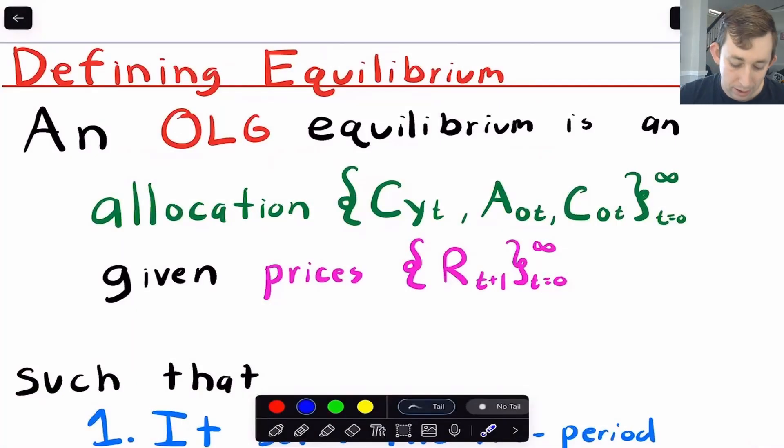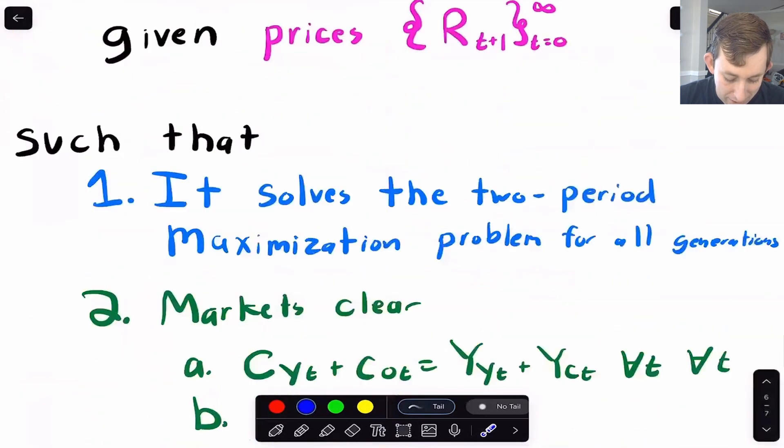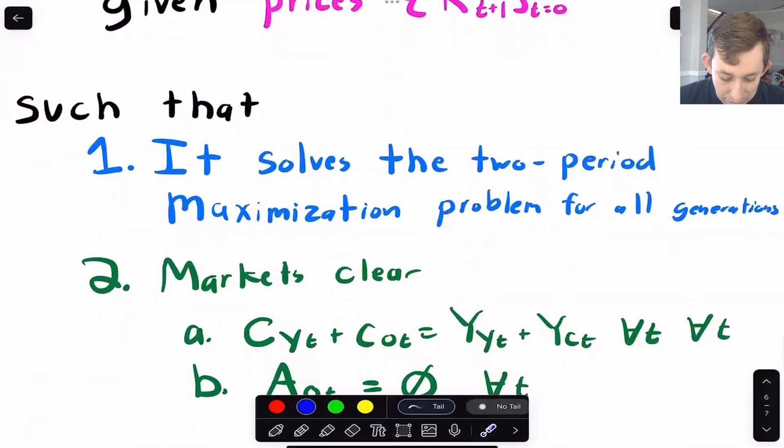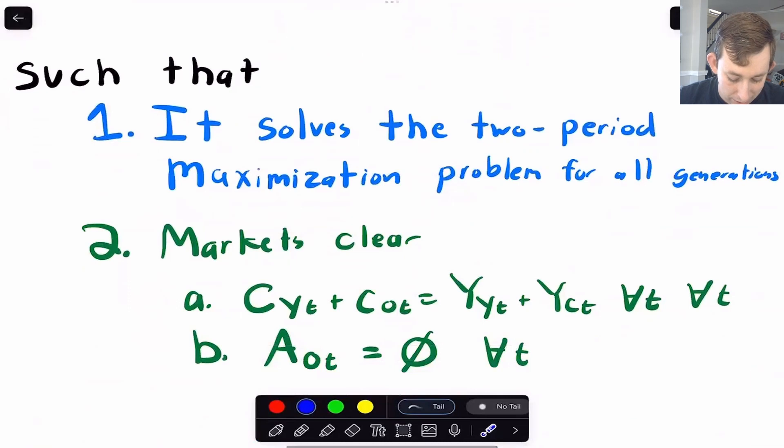So the OLG equilibrium is an allocation because remember, anytime we talk about competitive equilibrium, it's always an allocation given prices that solves the maximization or minimization problem and satisfies market clearing. And we're just applying that definition to an OLG model. So it's an allocation where every period you choose how much people eat when they're young, how much they put away into retirement, how much the old people eat from T equals zero to infinity. Given prices, in this case, our prices are really just our interest rate. And it's got to satisfy the maximization problem that we just talked about for all generations.